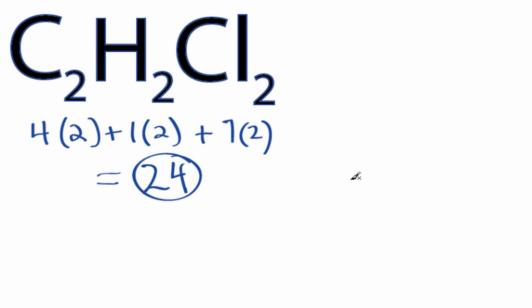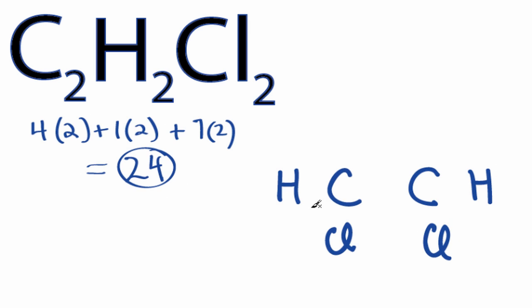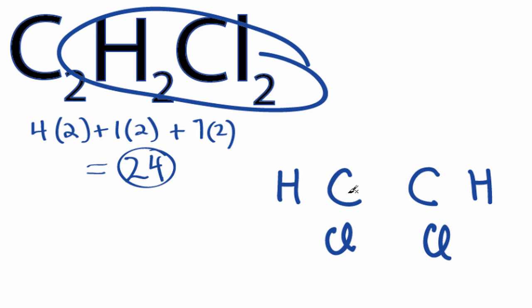Carbon is the least electronegative, we'll put that in the center, and we know hydrogens always go on the outside. But here's the problem: where do we put the hydrogens? Do we have 2 hydrogens on one side and 2 chlorines on the other? Or do we have a hydrogen and a chlorine on each side? They're very different chemical compounds with different properties. We can't tell from this molecular formula which way we're supposed to do it.